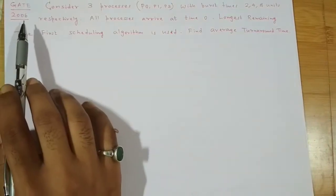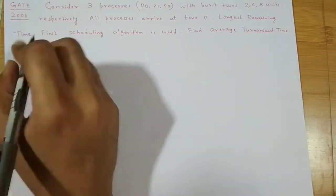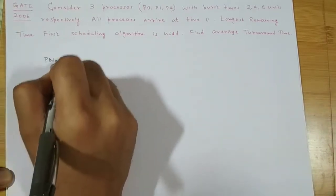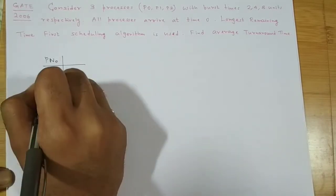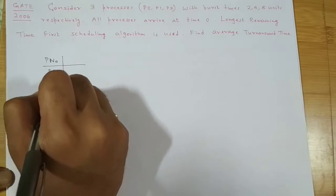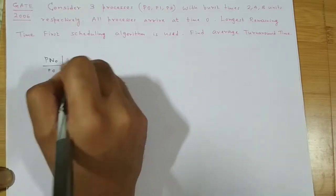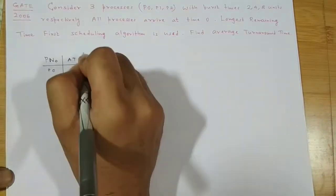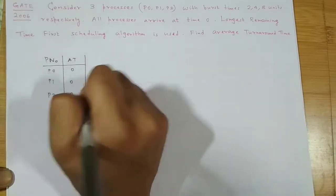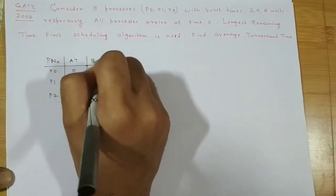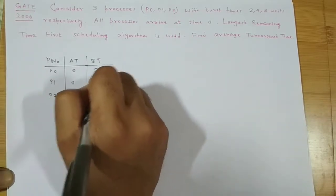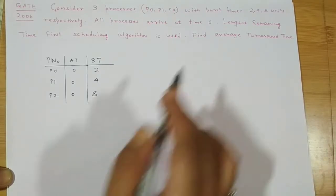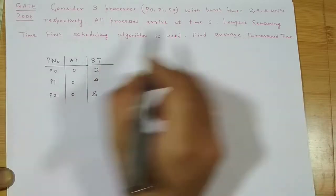This question has been asked in GATE 2006. We have been given three processes P0, P1, and P2. Their arrival time is the same — all arrive at time 0. We have been given the burst times as well: 2, 4, and 8 units respectively. We have to find the average turnaround time using Longest Remaining Time First (LRTF) scheduling.